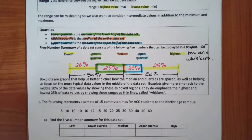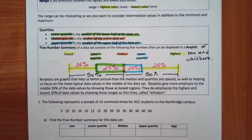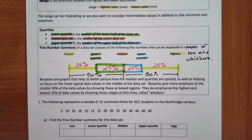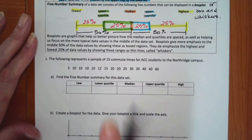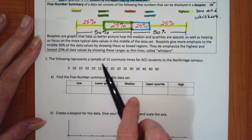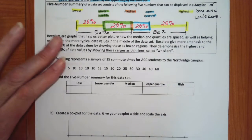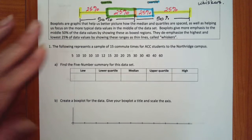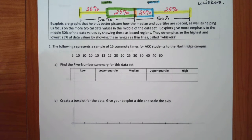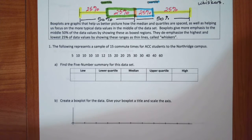We're going to put all this together and learn how, given a set of data, we can create the five-number summary and create the box plot. So we've got some data here — a sample of 15 commute times for ACC students to the Northridge campus, back when we actually got to go to a classroom.